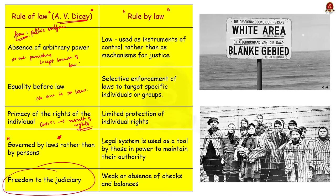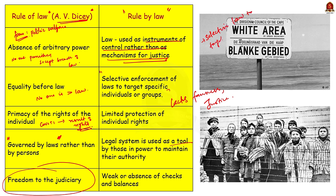On the contrary, rule by law refers to a situation where the legal system is used as a tool by those in power to maintain their authority. Law may be used selectively to favour those in authority and punish others, and legal mechanisms can be manipulated for political purposes. It lacks emphasis on fairness, justice and equal application. Its characteristics include: law used as an instrument of control rather than justice; selective enforcement targeting specific groups; limited protection of individual rights when in conflict with those in power; and weak or absent checks and balances on governmental actions.